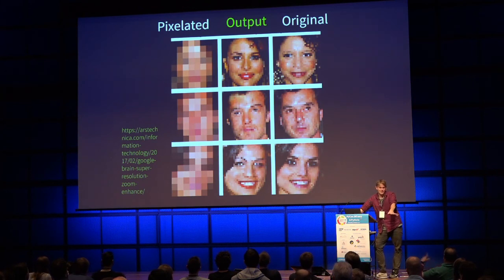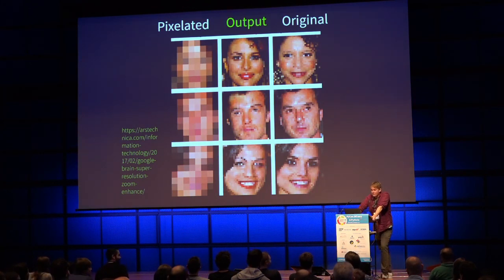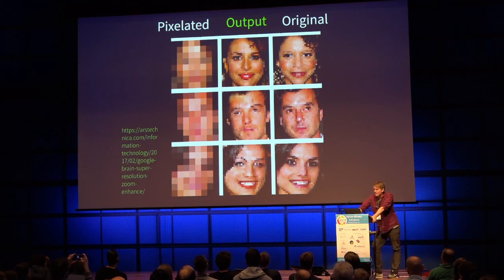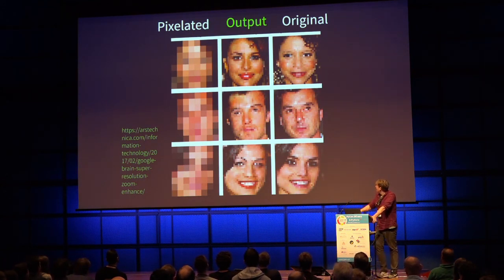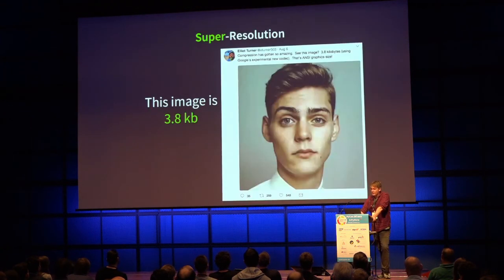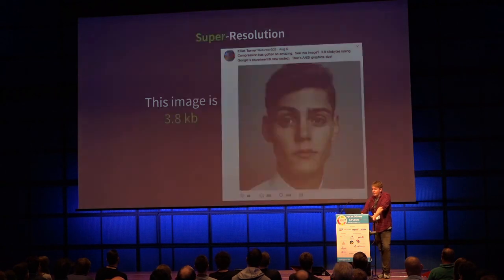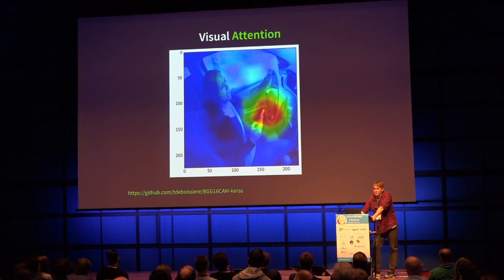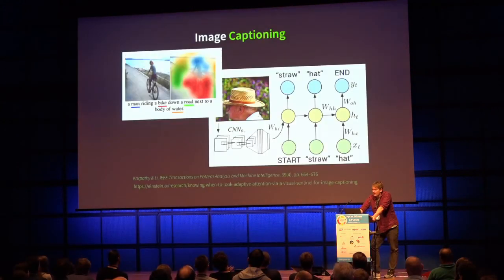Given pixelated images, we can have a model reconstruct the middle portion, which is remarkably close to the ground truth. We can generate this training data easily as well — that image is only 3.8 kilobytes. You can also compute gradients with respect to the input image to visualize where the model is paying attention for different classes. Then there's captioning and image QA.